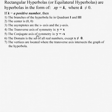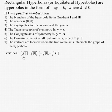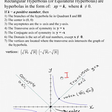The conjugate axis of symmetry is y equals the opposite of x. The domain is the set of all real numbers, except x cannot be 0. The vertices are located where the transverse axis intercepts the graph of the hyperbola, so the vertices are going to be at (√|k|, √|k|) and (−√|k|, −√|k|). That's how we calculate the vertices.